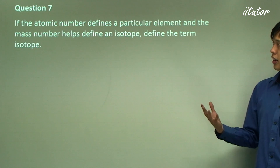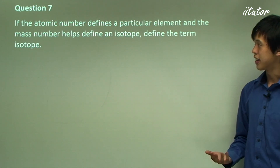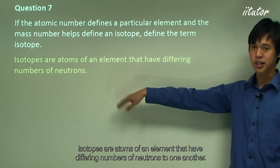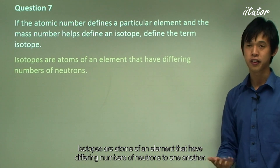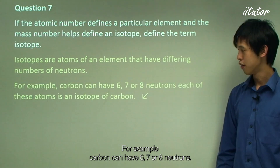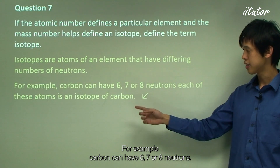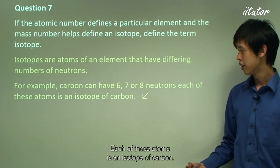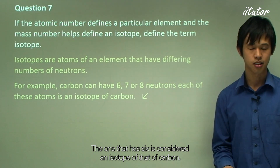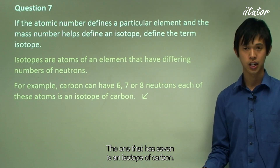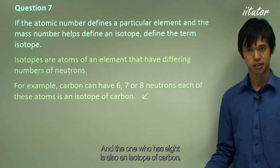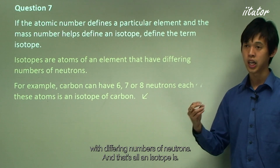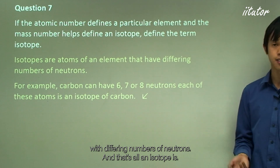If the atomic number defines a particular element and the mass number defines an isotope, define the term isotope. Isotopes are atoms of an element that have differing numbers of neutrons from one another. For example, carbon can have 6, 7, or 8 neutrons — each of these atoms is an isotope of carbon.